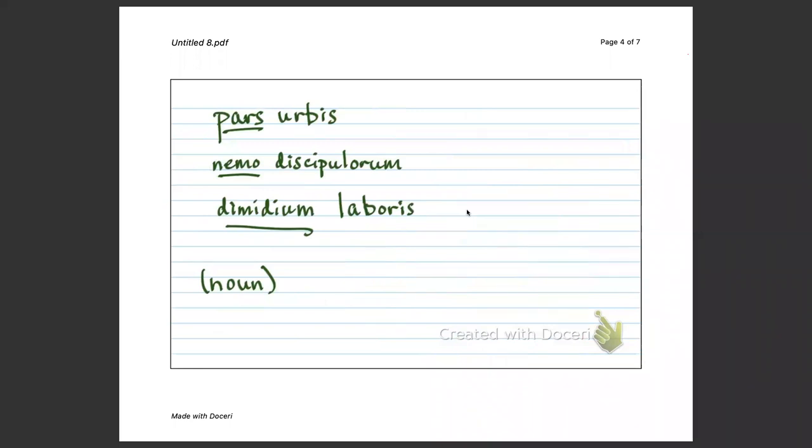Now, here, we have some other examples of the partitive genitive. So, with the partitive genitive, or the genitive of the whole, you will find it being used when you have a noun that represents some subset of a thing, or some subset of a collective.